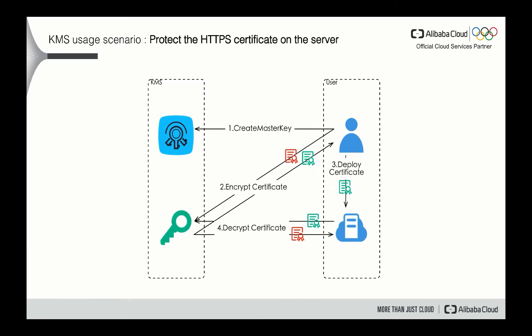Here are the two major scenarios where we can leverage KMS. The first one is the master key scenario. We can take an HCP certification as an example. If you want to encrypt a small size file, you can just use the master key to call the encrypt function and give it a plain text file like a certification file. Then KMS will return you with the encrypted certification file, and you can just store the file into the storage. When you want to decrypt, you can use the API again to retrieve the file and use the master key to decrypt it. It's a very straightforward scenario.